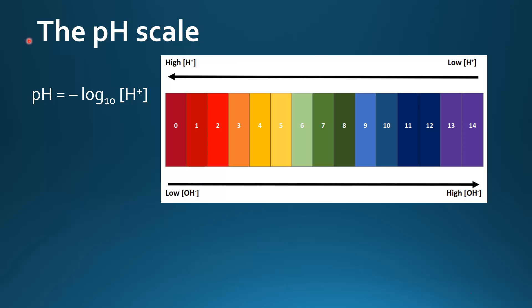In this video we will look at the pH scale. We will start with the definition of pH. pH is equal to the negative log to the base 10 of the hydrogen ion concentration.